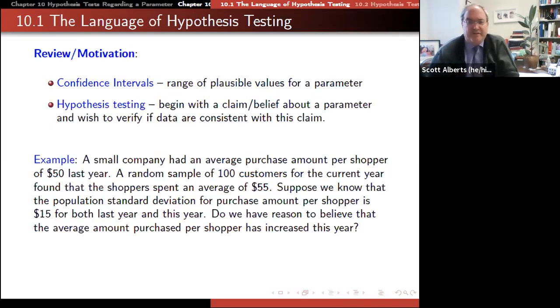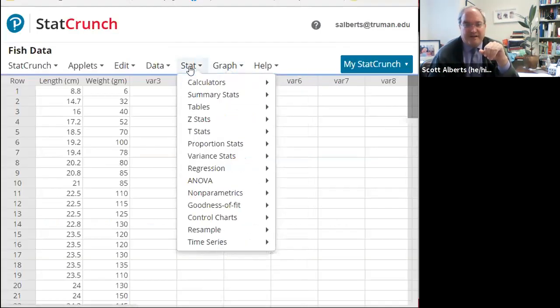So for instance, here is a good example that she puts in here. So a small company had an average purchase per shopper of $50. A random sample of 100 customers this year found that the shopper spent an average of $55. Suppose that we know that the population standard deviation is about $15 both last year and this year. So do we have enough reason to think that the average amount purchased per shopper has increased this year? So 55 is a little bit more than 50. But is it enough that we really think there was a change, or is that just what random variation might be? And so I'll show you her formula here in a minute, but I want to show you just how we can do it in StatCrunch.